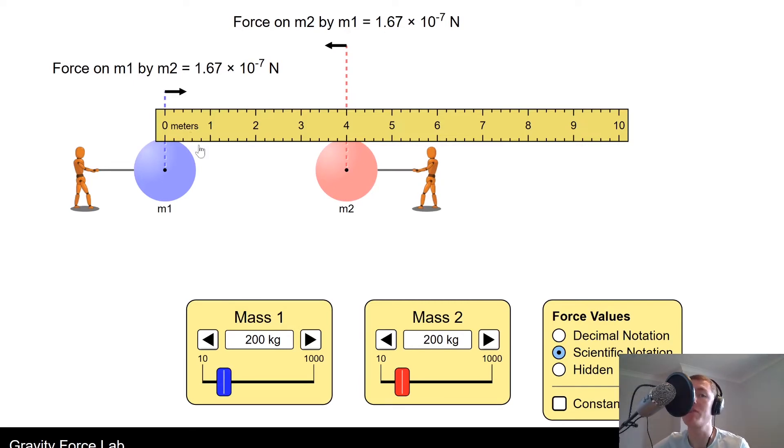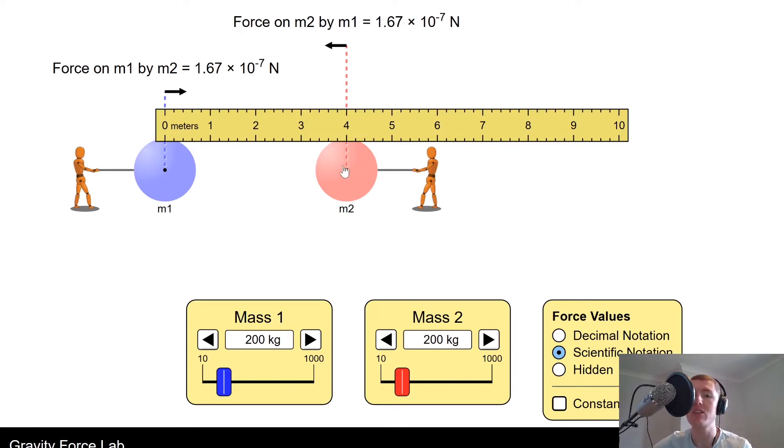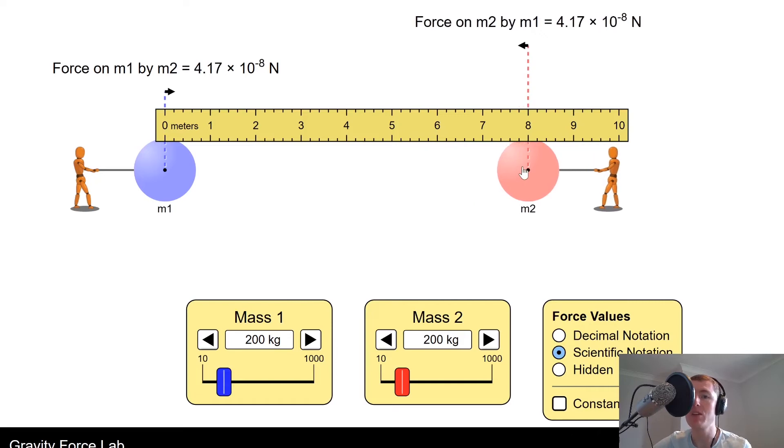You can check by dividing the first value by 4 that we get this value. If we were to then double that again from 4 meters to 8 meters, we should expect this to quarter again by the inverse square law. So if I increase the distance from 4 to 8 meters, we get 4.17 times 10 to the minus 8 newtons. Again, you can check by dividing the first number by 4 that we get this value.